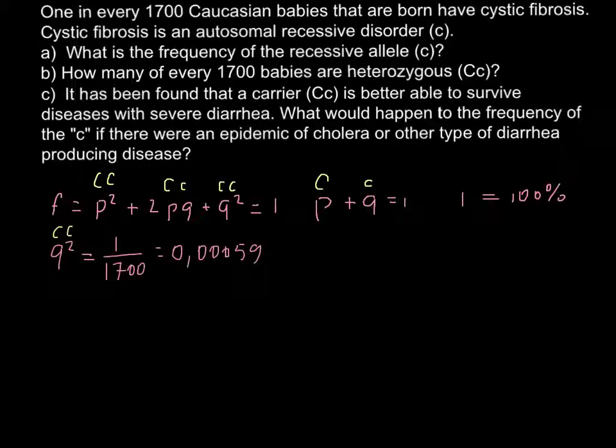Now we can find q, and we need to find q in order to find p. Because p plus q equals 1, we can easily find p if we know q. We can find q by taking the square root of 0.00059. The answer is 0.024, and this is the frequency of the q allele.